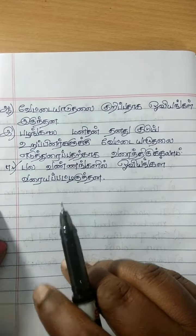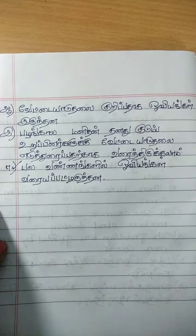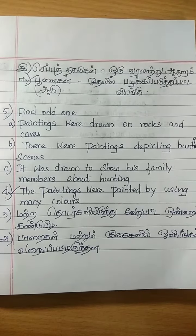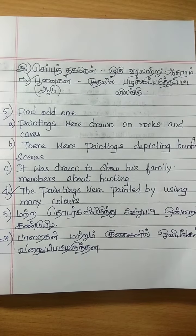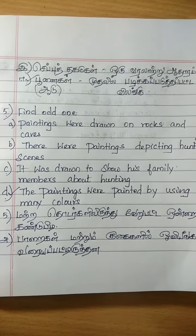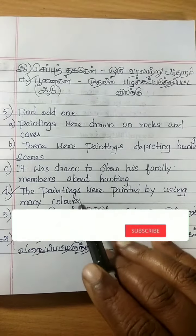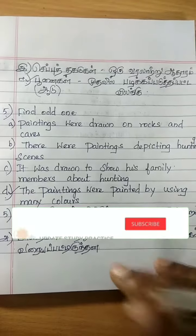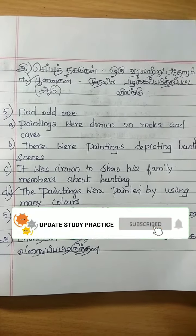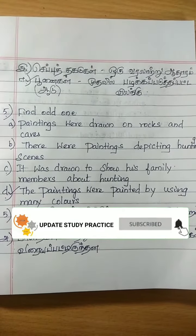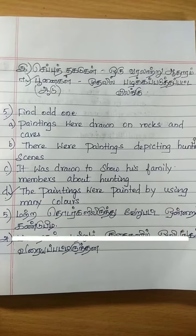Odd one out: The paintings were painted by using many colors. This is the odd one out. Note down this. Tomorrow we can see with 6 questions. Thank you.